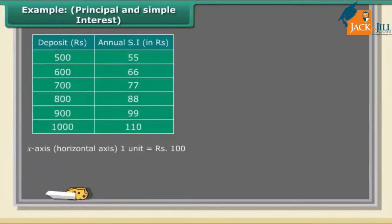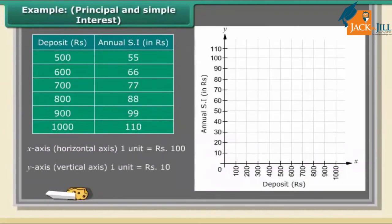Solution: (a) Mark the deposit in rupees on the x-axis (horizontal axis) with 1 unit equal to rupees 100. (b) Mark annual simple interest in rupees on the y-axis (vertical axis) with 1 unit equal to rupees 10. (c) Plot the points (500,55), (600,66), (700,77), (800,88), (900,99), (1000,110). (d) Join the points.